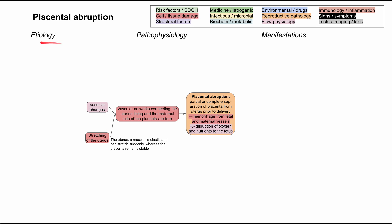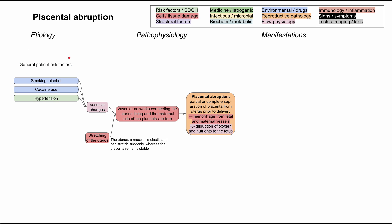Now let's work our way back to the etiologies and talk about risk factors for placental abruption. First, there are general patient risk factors. Smoking and alcohol cause vascular changes throughout your entire body, and if mom is doing these during pregnancy, it could be very damaging to the placenta and the vessels of the uterus. Smoking specifically causes vasoconstriction, and cocaine use also causes vasoconstriction. Alcohol is detrimental to vessels in general, and hypertension also causes vasoconstriction — so all of these contribute to placental abruption through vascular changes.